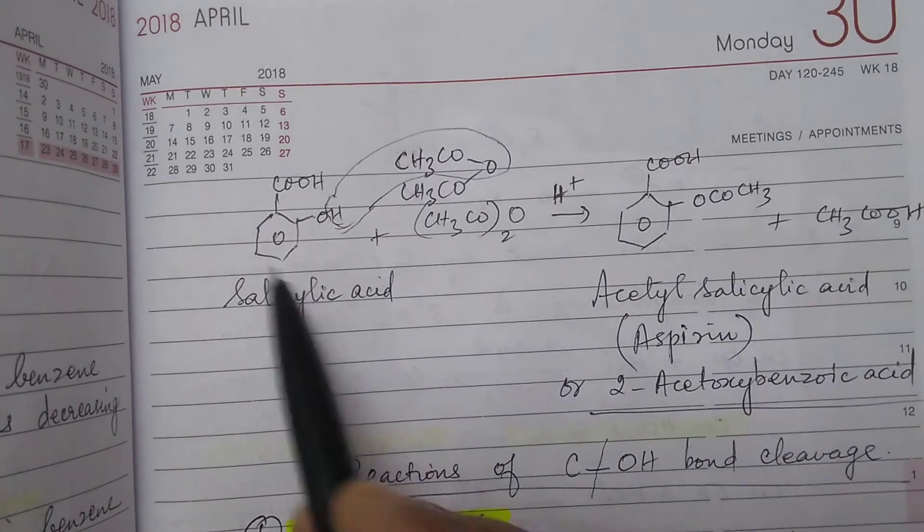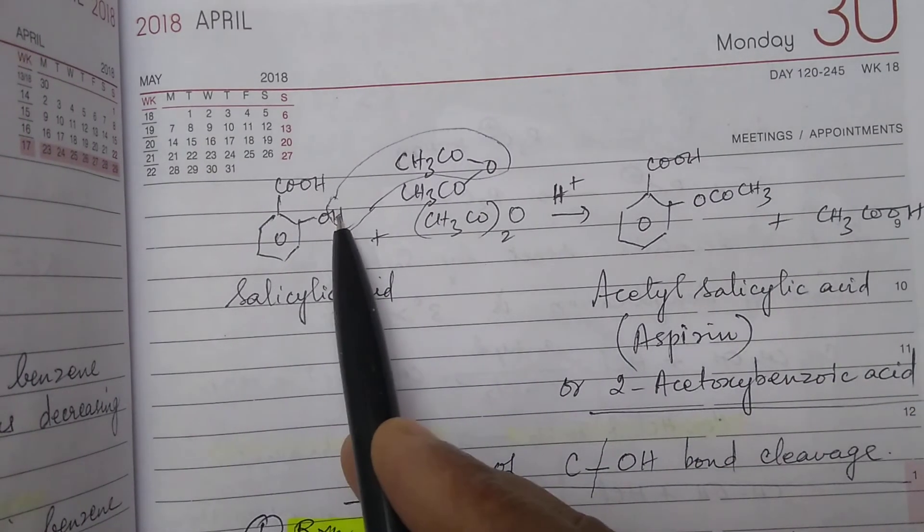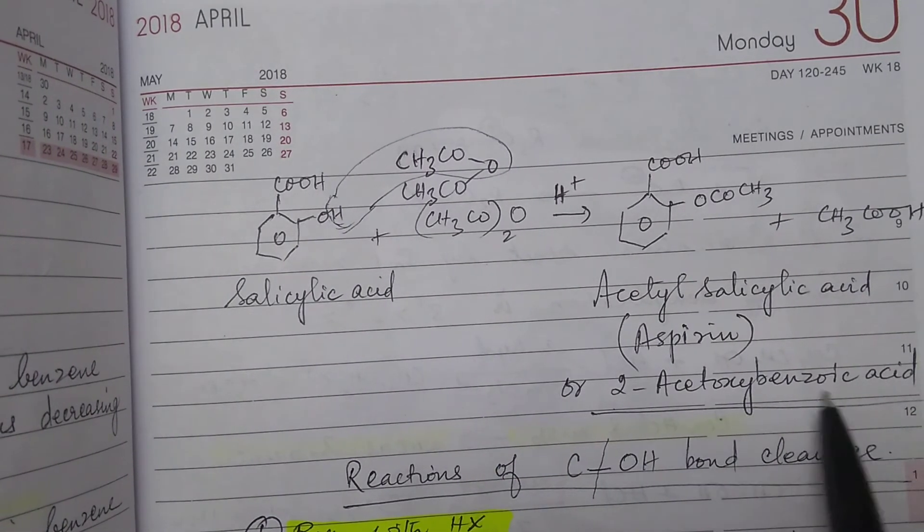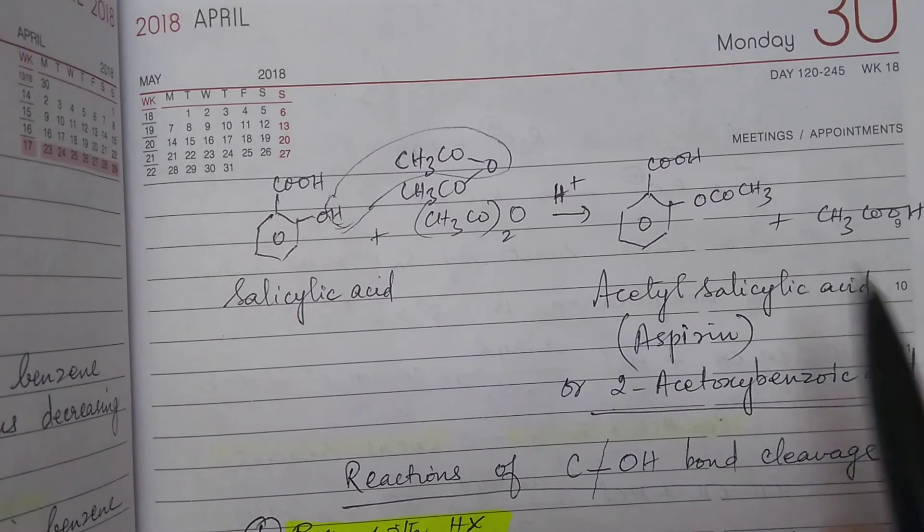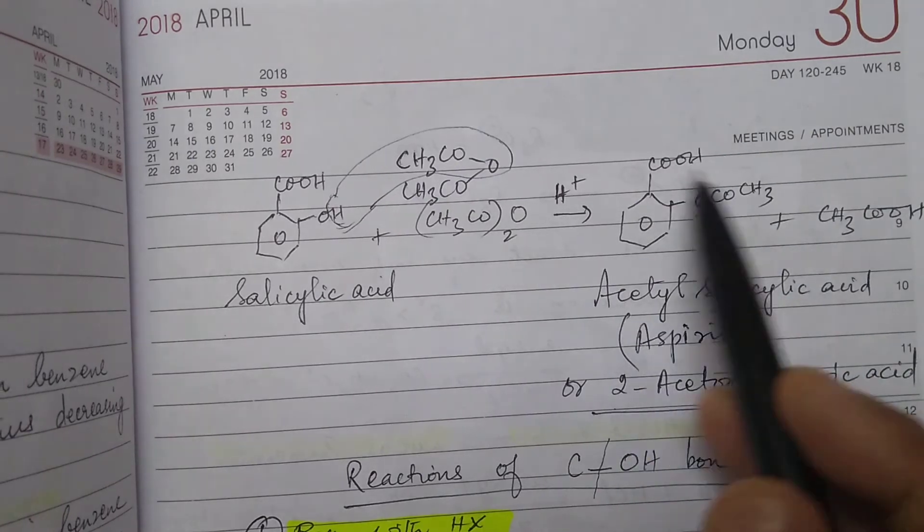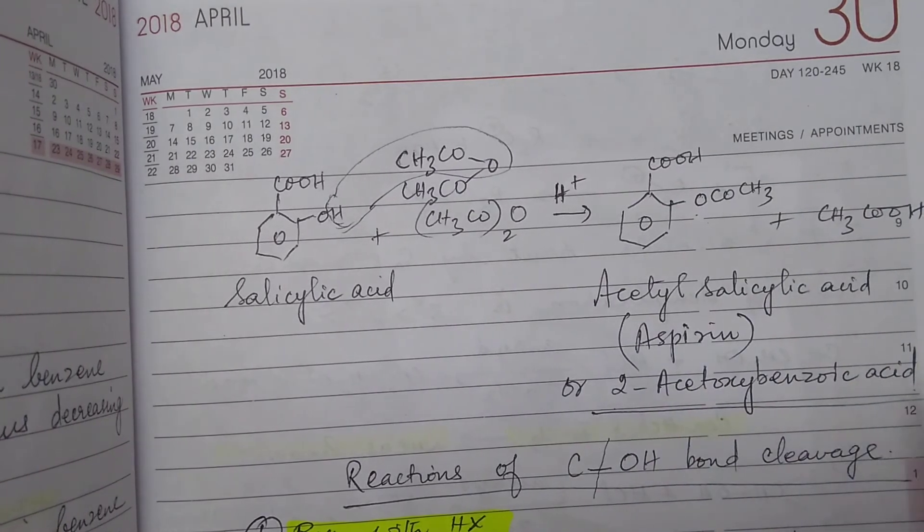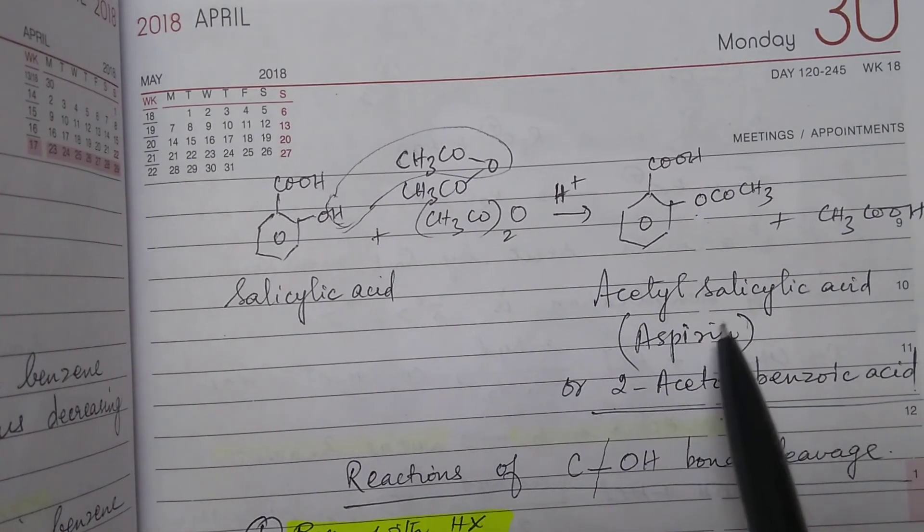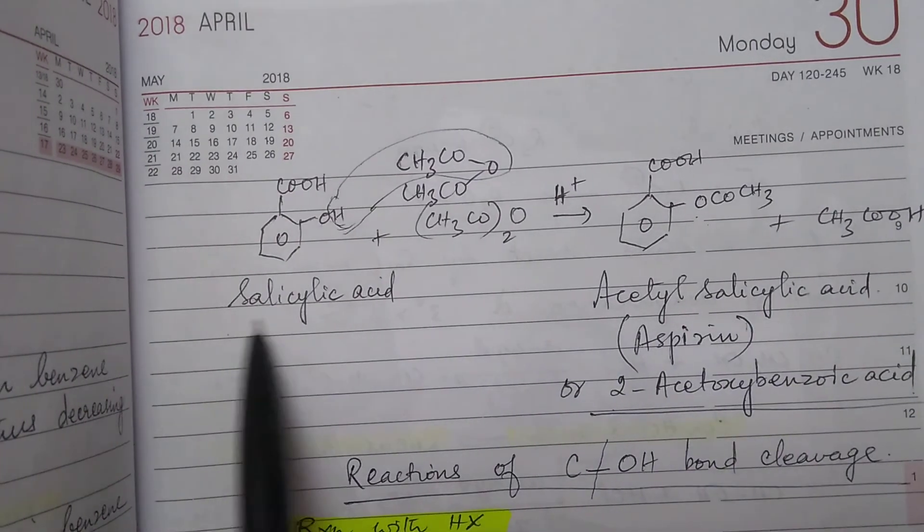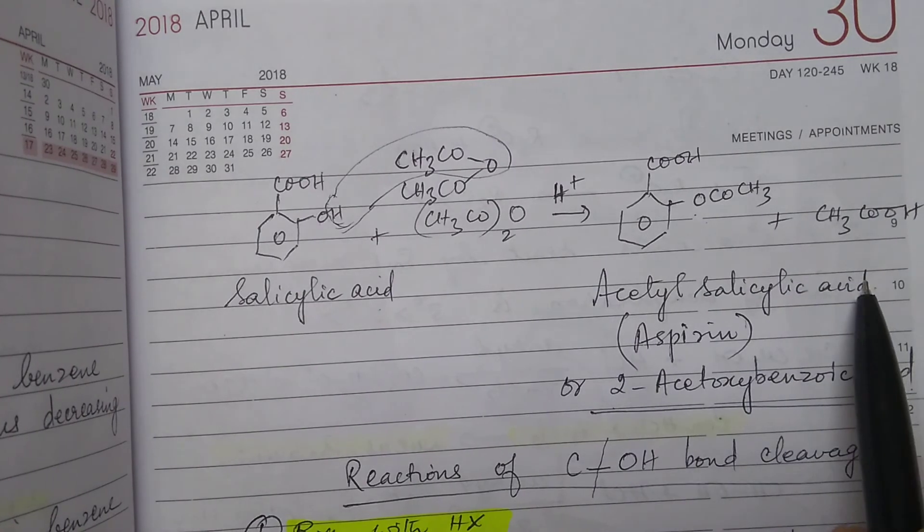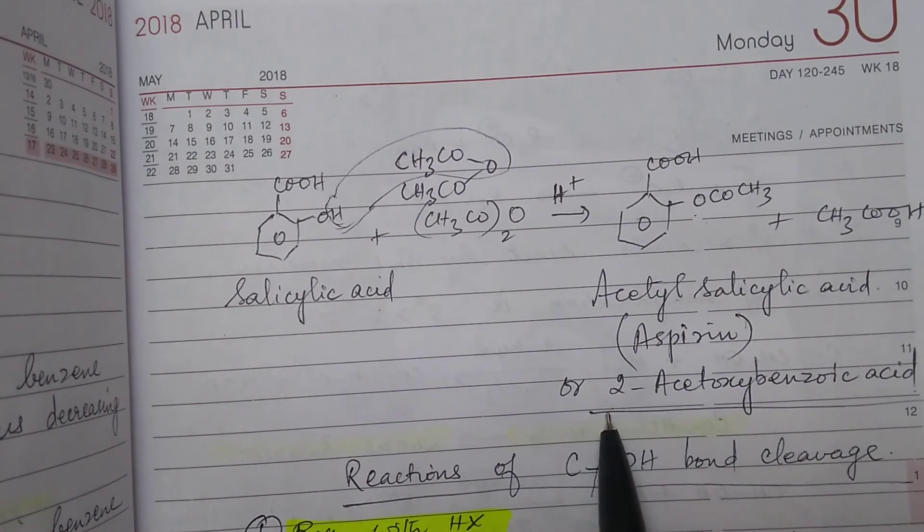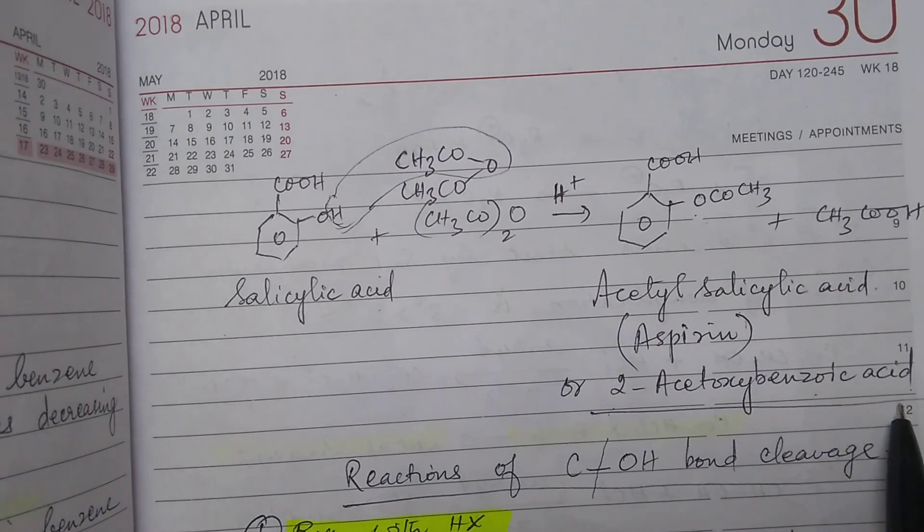So what is this? Initially you said it is 2-hydroxybenzoic acid. So you can call this as 2-acetoxybenzoic acid, acetyl oxy. So you call it as acetoxybenzoic acid which is commercially called as aspirin. You can also call it as acetyl salicylic acid. This is salicylic acid, this is acetyl salicylic acid. Commercially it is called aspirin. IUPAC nomenclature is 2-acetoxybenzoic acid.